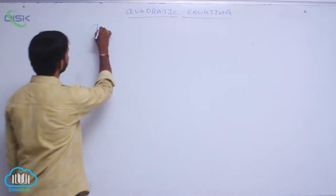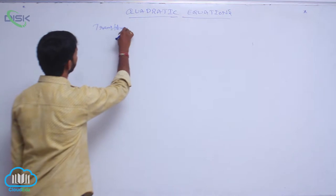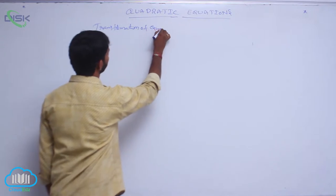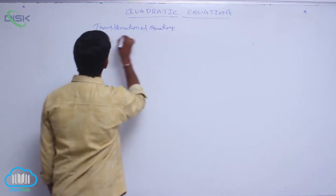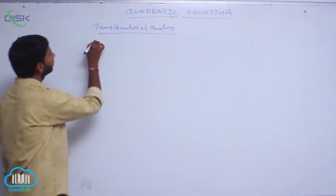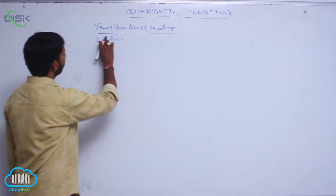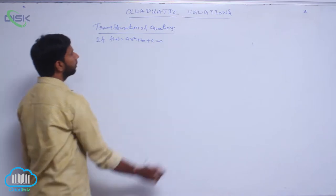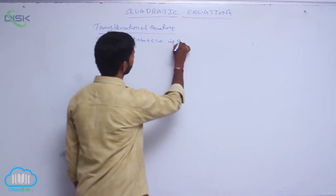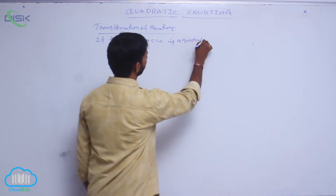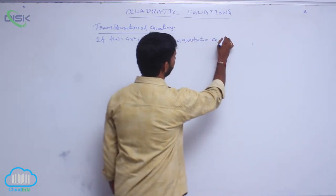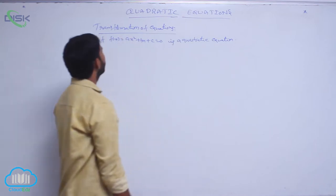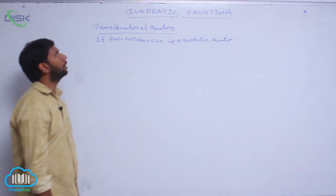Next we go to transformation of equations. If f of x equal to ax squared plus bx plus c equal to 0 is a quadratic equation.